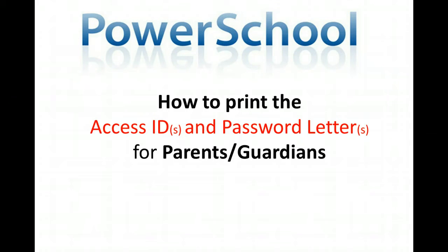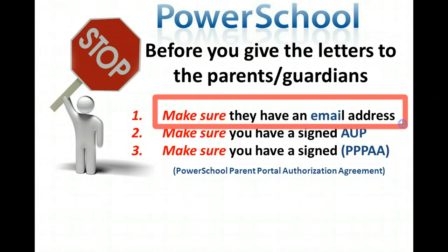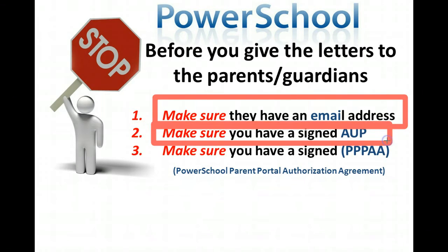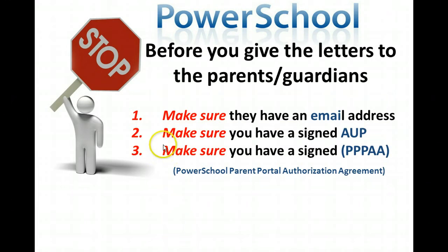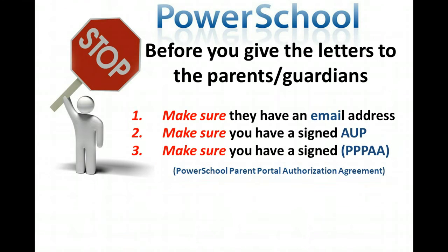Before you print the letters and give them to parents and guardians, make sure of three things: one, that they have an email address; two, make sure they have an AUP; and three, make sure they have a PPPA — a PowerSchool Parent Portal Authorization Agreement. Make sure they have that in place before you physically give them the letter.